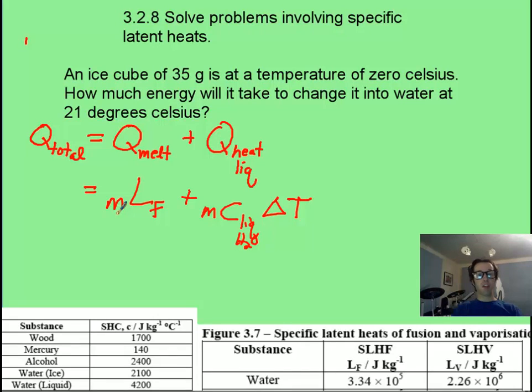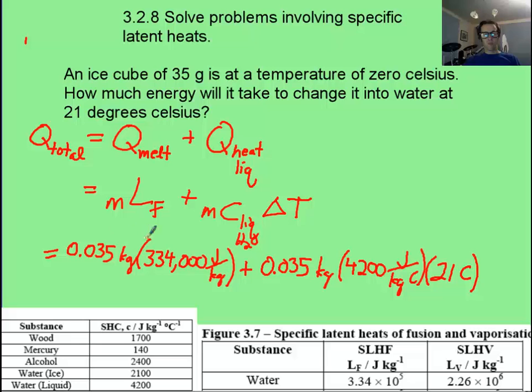Pause it. Here I've plugged in the numbers. Notice you have to change your masses to kilograms. I took this scientific notation number and I turned it into a big 334,000 and that is going to give me my 11,690 joules. For this second term, notice my temperature change here. It went from zero up to 21 Celsius. And that's going to be a smaller value of 3,087 joules.